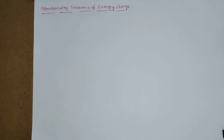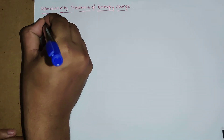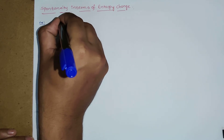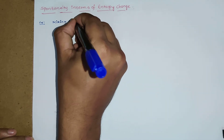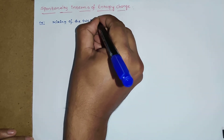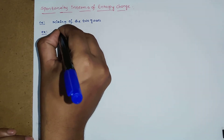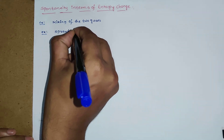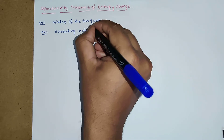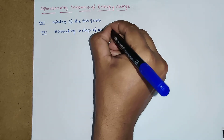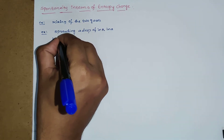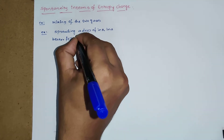A process is said to be spontaneous or non-spontaneous based on entropy change. Two examples: mixing of two gases, and spreading a drop of ink in a beaker filled with water. In both cases, these are isolated systems — there is no exchange of energy or matter with the surroundings.